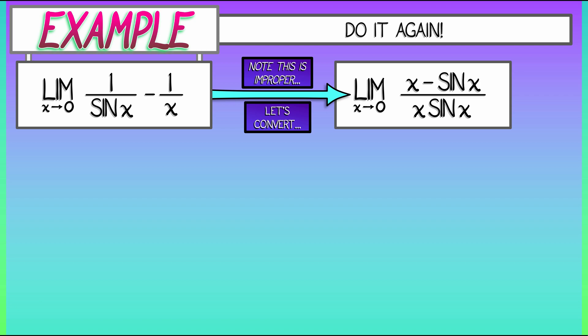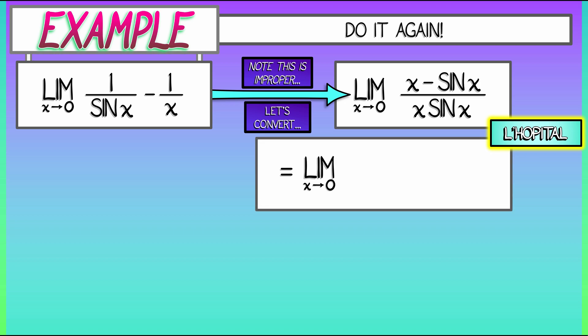Now, I can apply L'Hopital's rule to this and take the limit as x goes to zero. If I differentiate that denominator, x times sine of x, then based on the product rule, I get sine of x plus x times cosine of x. In the numerator, the derivative of x minus sine of x is one minus cosine of x.